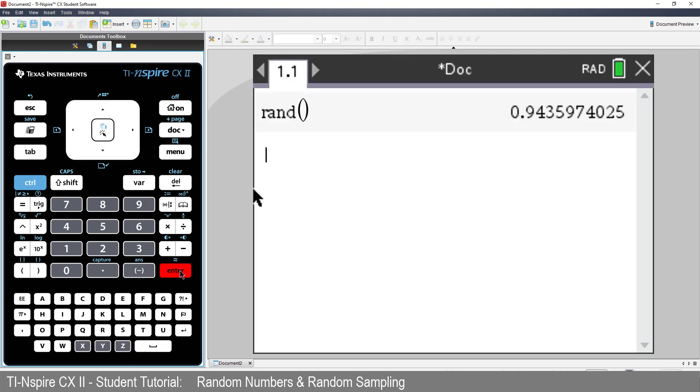Press enter, and you've generated your first random number. If you want to generate another, just press enter again.